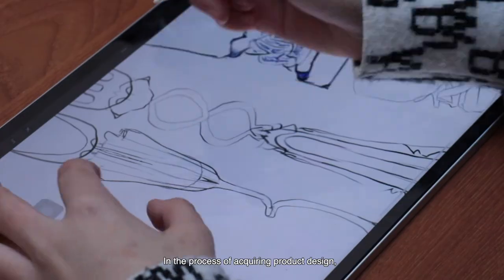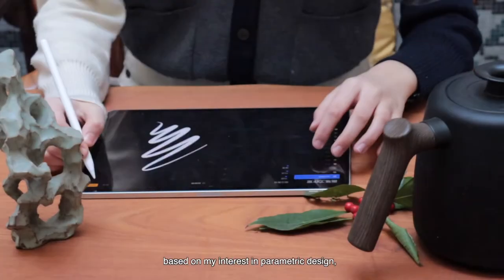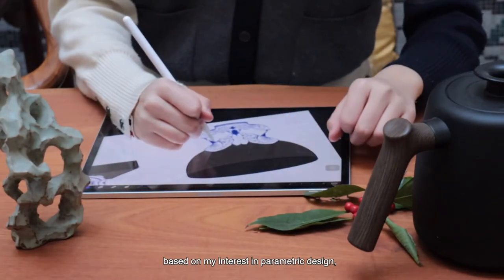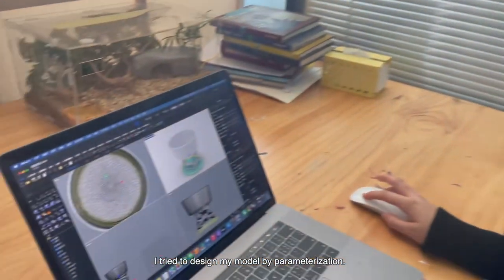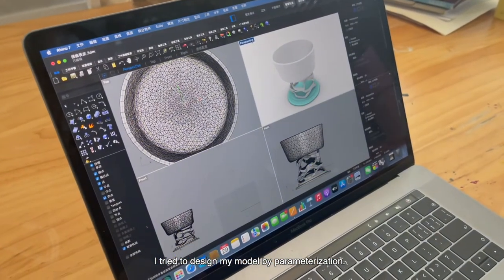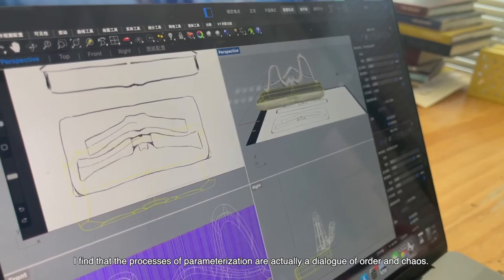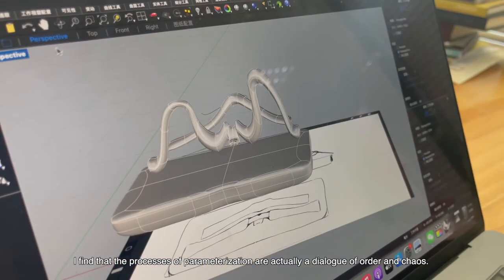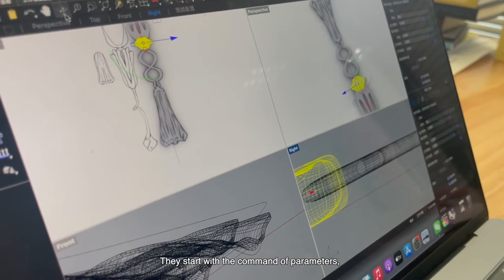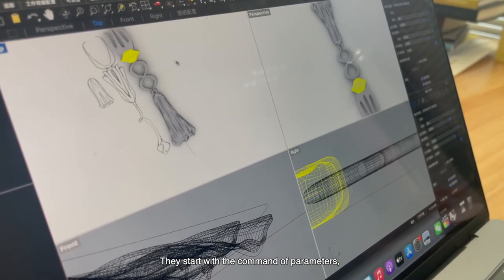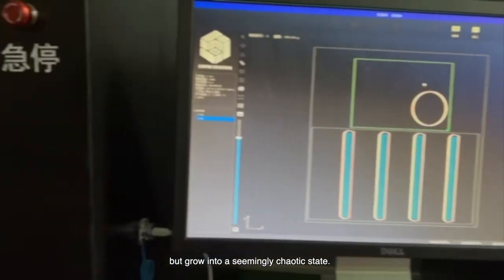In the process of querying product design, based on my interest in parametric design, I tried to design my model by parameterization. I find that the process of parameterization is actually a dialogue of order and chaos. They start with the command of parameters, but grow into a seemingly chaotic state.